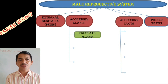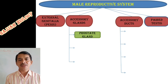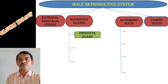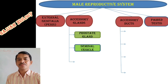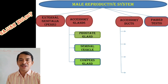Next we study about the accessory glands. The accessory glands consist of a prostate gland, seminal vesicle, and corpus gland. Another name for this corpus gland is the bulbo-urethral gland.